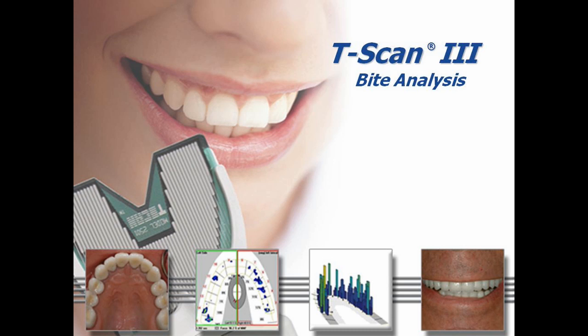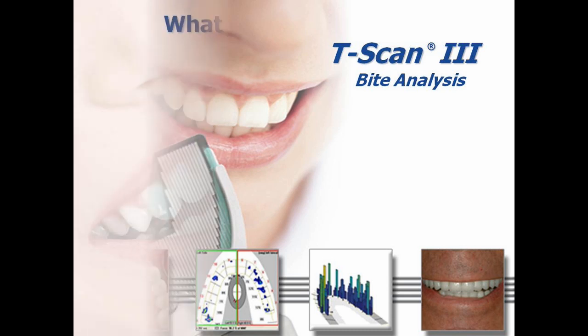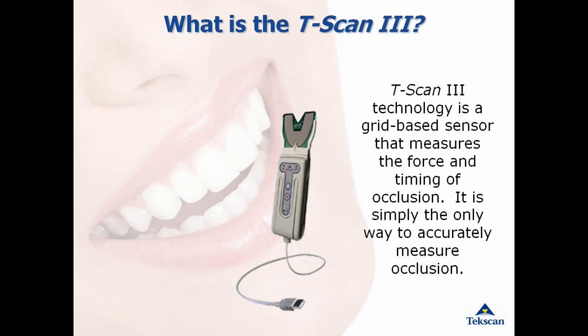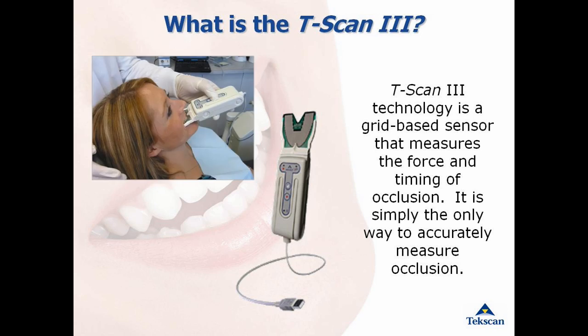The following is a demonstration of the T-Scan3 bite analysis system. The T-Scan instantly displays interferences and timing and force levels for evaluation and treatment of occlusion. Your patient simply bites down on an ultra-thin sensor and the software displays the timing of contacts and levels of force in vivid graphics. With this data, visualizing and achieving a balanced bite is easy to accomplish.